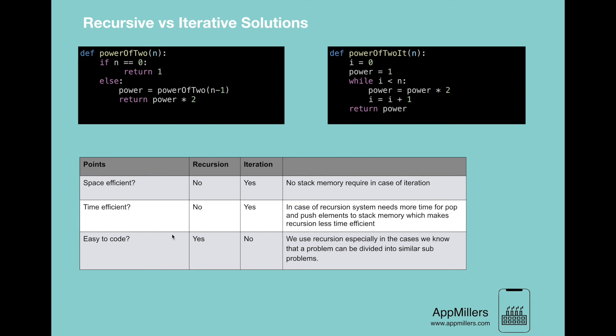The next point is ease of coding. Recursion is very easy to code — many complicated problems can be written recursively with ease. However, writing those same problems iteratively can be very difficult. That's why if we know a problem can be divided into similar sub-problems, it's advisable to use recursion. That's all for the comparison of recursion versus iteration — hopefully you understand the main differences between them.